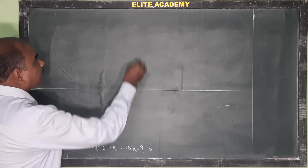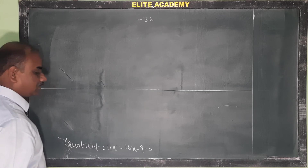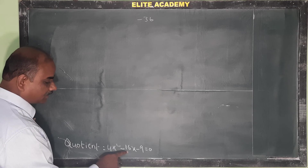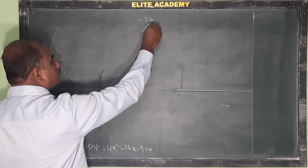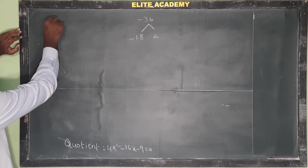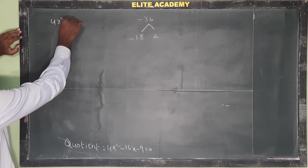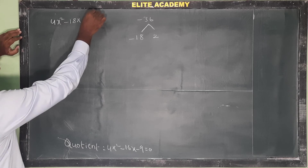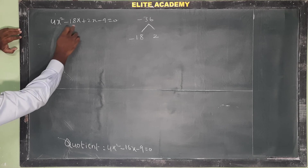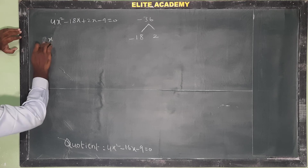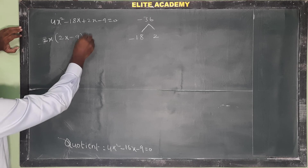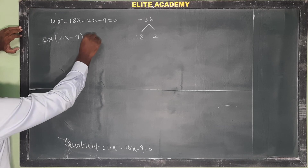To factor 4x² minus 16x minus 9, multiply 4 by minus 9 to get minus 36. Find factors of minus 36 that add to minus 16: that is minus 18 and plus 2. Rewrite as 4x² minus 18x plus 2x minus 9 equals 0. Taking 2x common from the first two terms gives 2x(2x minus 9).